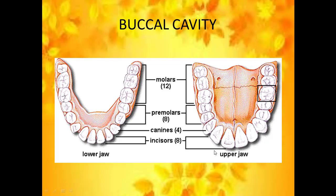The permanent teeth are classified into four types: incisors, canines, premolars and molars. You can see broad, scissor-shaped teeth present in the front of our mouth. These are used for biting the food. Four incisors are present in the upper jaw and four in the lower jaw. Incisors are scissor-shaped and they are used for biting the food materials being consumed.